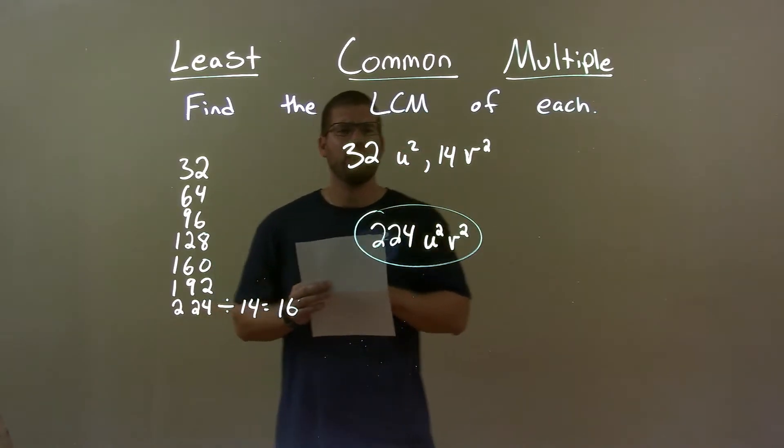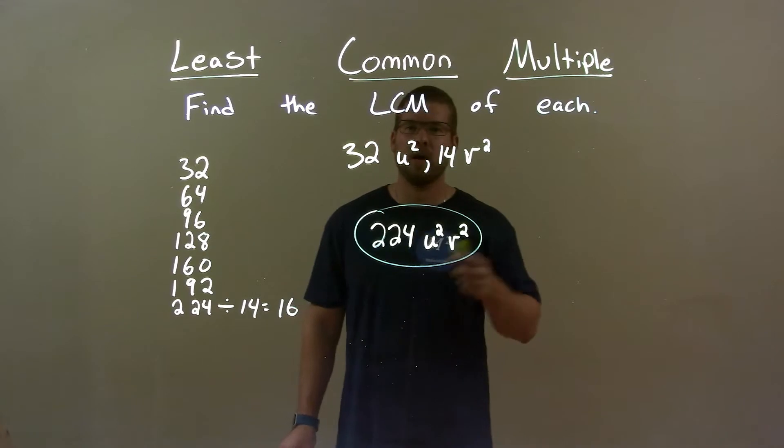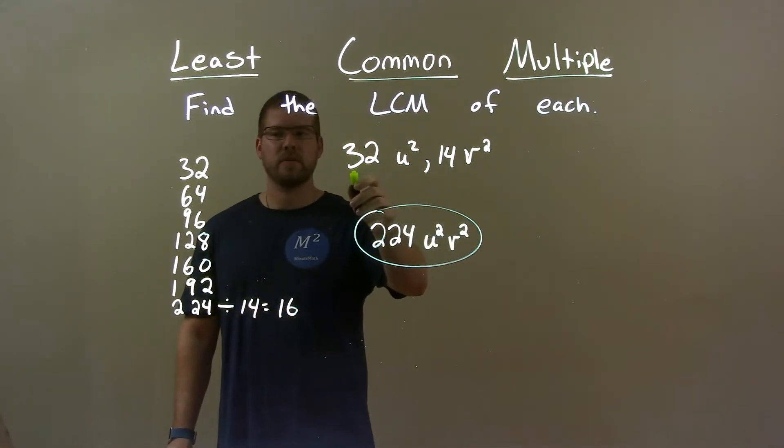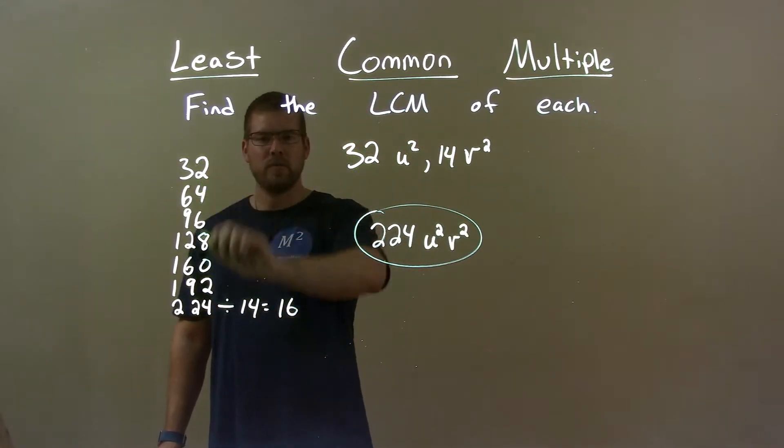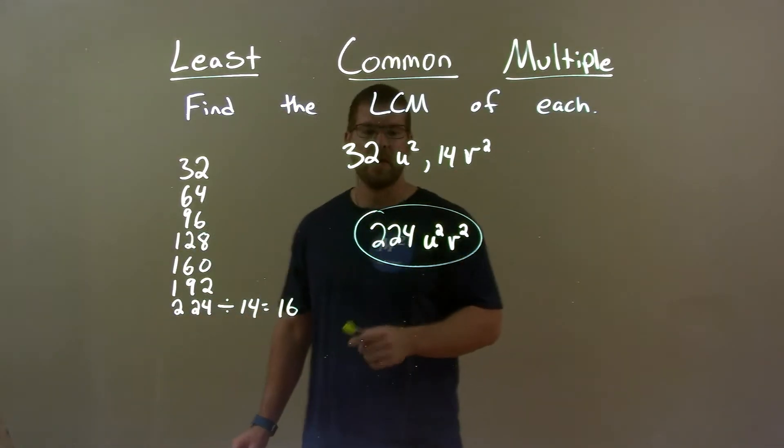Quick recap. We're given 32u squared and 14v squared, and we have to find the LCM of them. Out of the numbers, 32 is the largest of the two, and we went through its multiples and found that 224 was the smallest one that was divisible by 14.